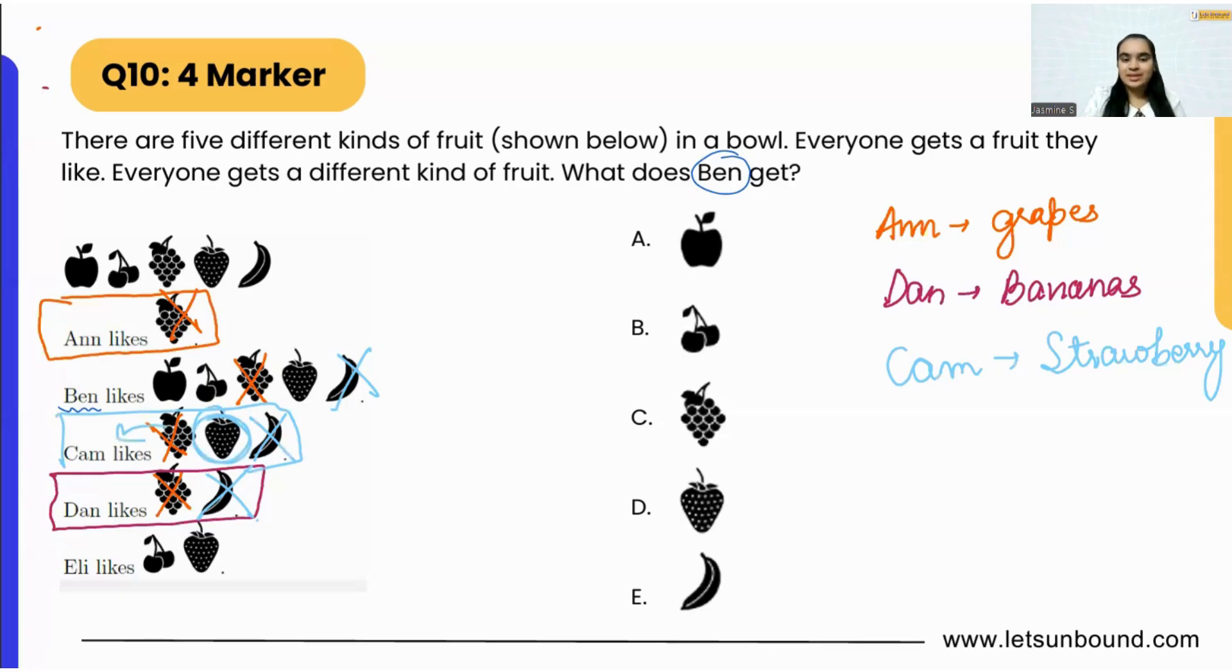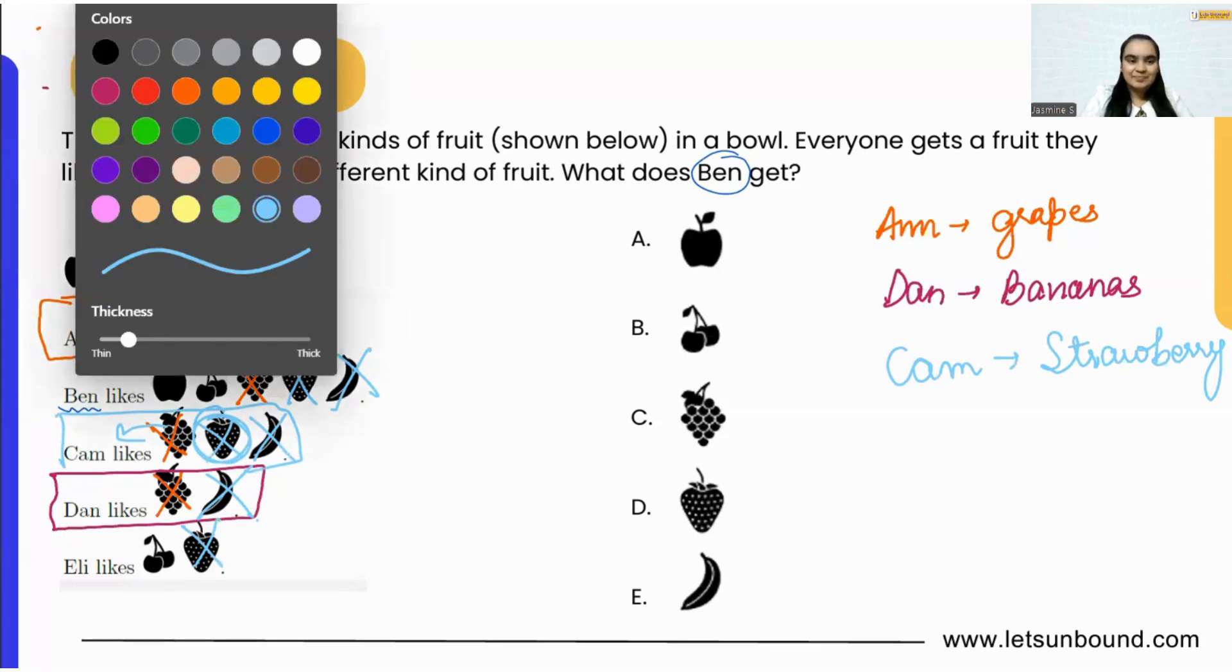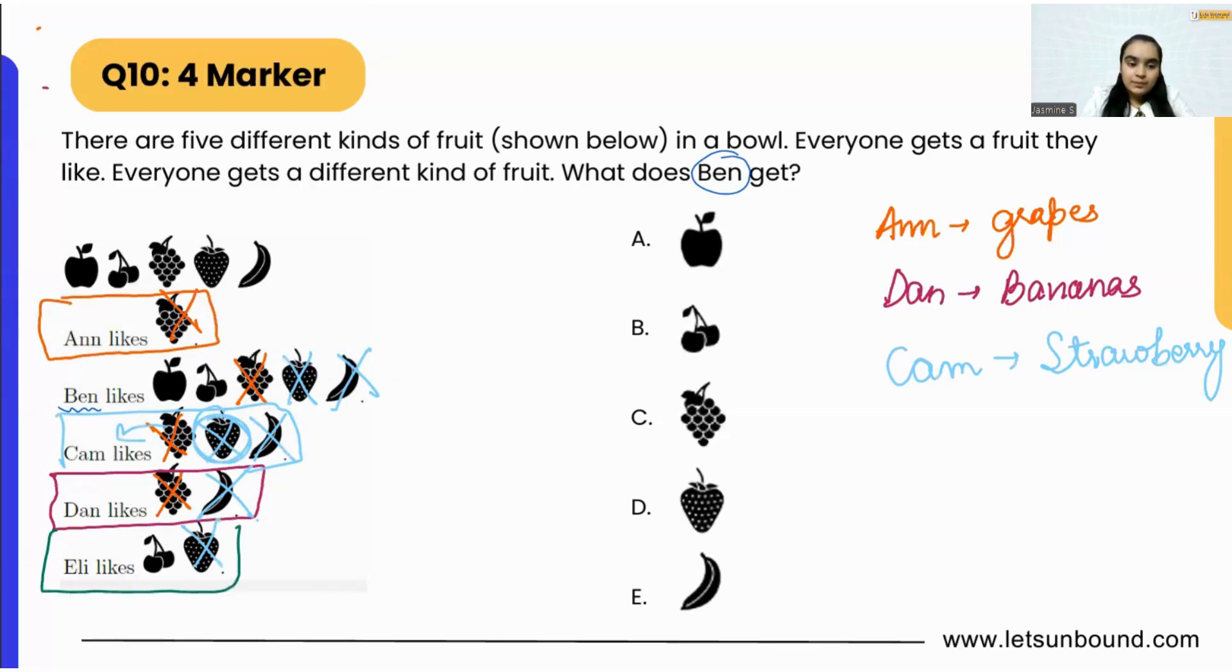Where should we go next? Yes, Eli. Now Eli will get cherries, because strawberries are already with Cam. So Eli will get cherry. Now if we are going to remove cherries as well.